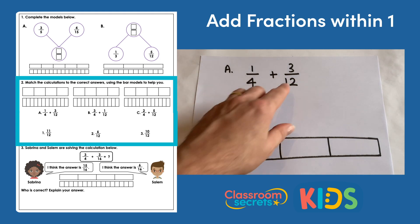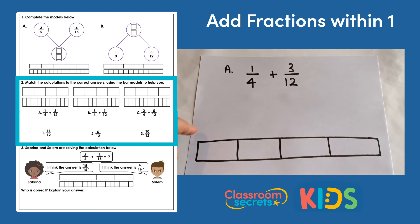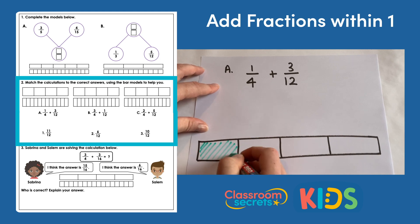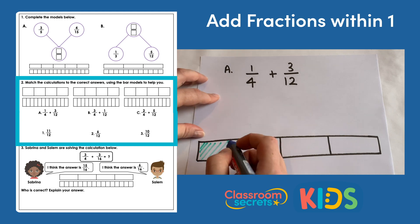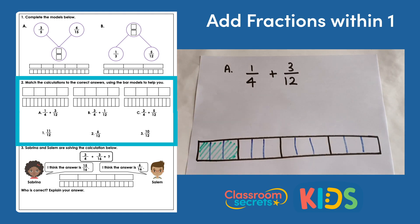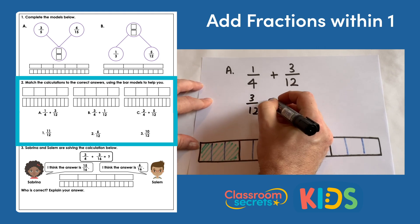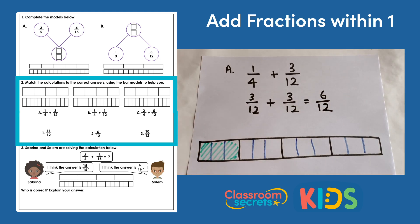So we have one quarter add three twelfths. Twelve is a multiple of four so we can convert the quarters into twelfths. Here's a bar model split into quarters; we're looking at one quarter so I'm just going to shade that in. We need to convert it to twelfths, which means splitting each of these quarters into three equal pieces — multiplying four by three — giving us twelfths. Now we have twelve equal pieces and one quarter is now three twelfths. So we can do three twelfths add three twelfths, which makes six twelfths — that is answer number two.